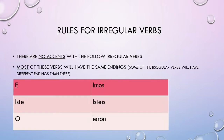Here are a couple of quick rules that you need to remember about irregular verbs. First of all, there are no accents. And most of these verbs are going to have the same endings.